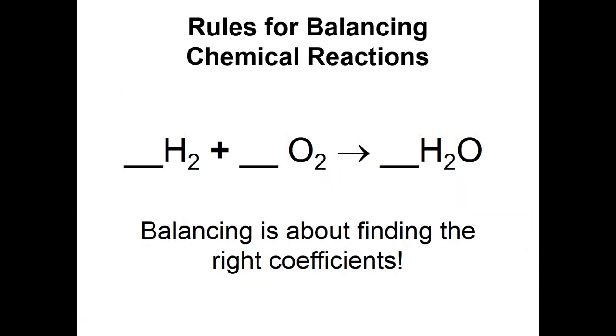Rules for balancing chemical reactions. Balancing is about finding the right coefficients. For example: H2 + O2 gives H2O.